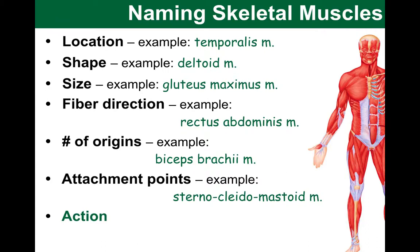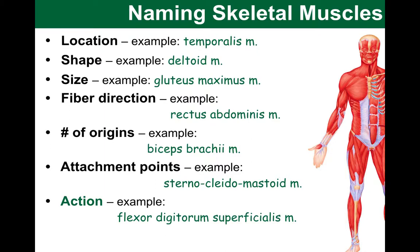Some muscles are named based on their action — the movement the muscle produces. The example I've picked is the flexor digitorum superficialis muscle. The key part of the name is 'flexor,' telling us this muscle flexes structures — in this case, the fingers or digits. Other examples include flexor carpi radialis in the upper limb or extensor digitorum longus of the lower limb.